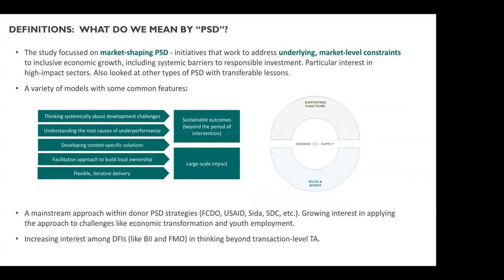We'll start with a few definitions before we get into the findings. In defining what we mean by PSD, the starting point was programs that look to address system-level constraints to inclusive growth — a variety of models and names: market shaping, market systems, upstream ecosystem building, et cetera. The idea is that projects think systemically about development challenges, trying to get to root causes rather than just the symptoms of underperformance. They recognize the importance of context and local ownership and work in an iterative way to navigate complexity. If these ingredients come together, the chances of sustainable impact at scale are increased.